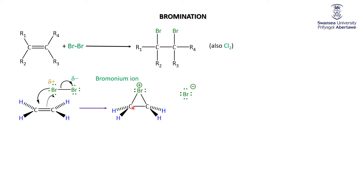This intermediate — the bromonium ion — has a positive charge on the bromine, and there's also a slightly positive charge on each of the two carbons. They are waiting for the other bromine, which is now the bromide anion, to come in and attack. But what's new compared to our last discussions: if you think back to the original carbocation, the bromide could attack from the top or from the bottom. Here, the bromide can't come in from the top because there's his old buddy sitting there.